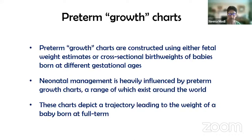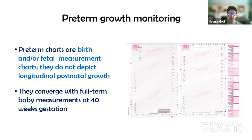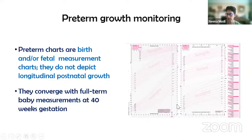A range of these charts exist around the world. These charts inevitably depict a trajectory leading to the weight of a baby born at full term. I'm going to focus on weight — not length and head circumference, just weight. Preterm charts are birth or fetal measurement charts. They don't depict longitudinal postnatal growth. They converge, as you can see in this UKWHO preterm chart, with full term baby measurements at 40 weeks postmenstrual age. The Fenton charts are equivalent.